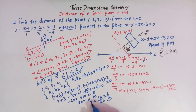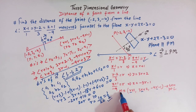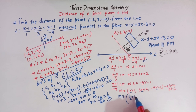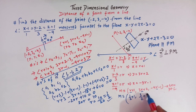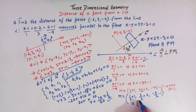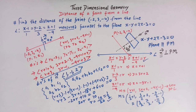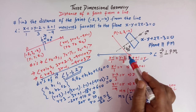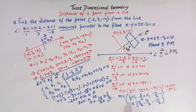Substituting R = 1/2 into the general point coordinates to get M: x = 1/2 + 1 = 3/2, y = 3/2 + 2 = 7/2, z = −9/2 − 1 = −11/2. So the coordinates of M are (3/2, 7/2, −11/2).